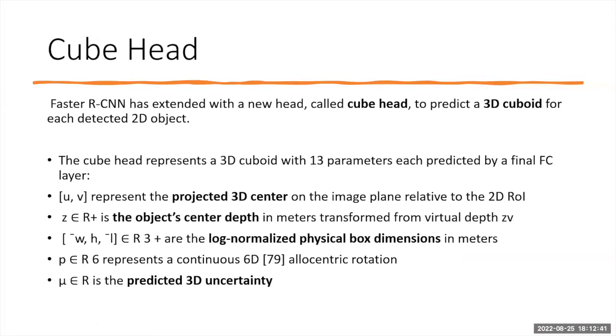In the Faster R-CNN model we added the cube head. This cube head has 13 important parameters we need to calculate to make the final 3D cuboid. We have u, v which represent the projected 3D center; z and r which represent object center depth; w, h, l are width, height, and length that will be log-normalized; and mu_r is the predicted 3D uncertainty.